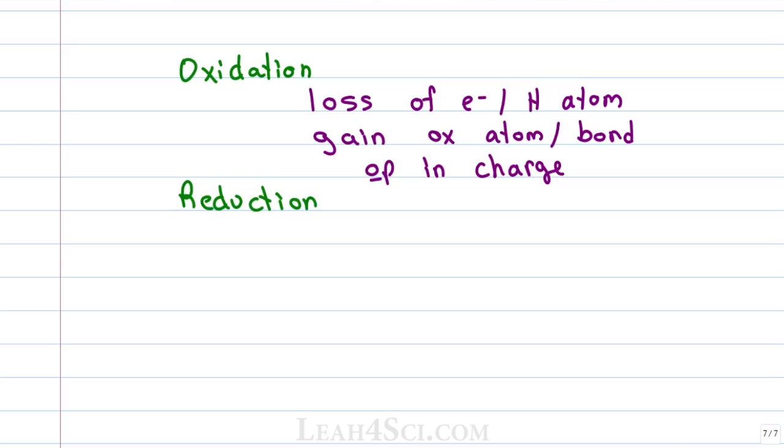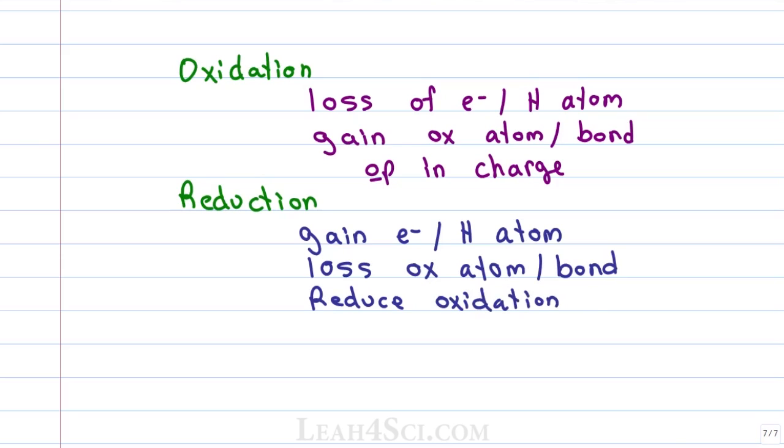We define reduction as gaining an electron or a hydrogen atom when a proton comes along with that electron. Losing an oxygen atom or a bond to an oxygen atom, so for example if you have a double bond oxygen to make that single bond that's a loss of a bond not an atom and it's still reduction, and finally to reduce the oxidation number or to reduce the charge of that atom.